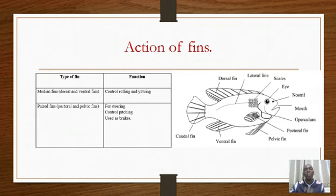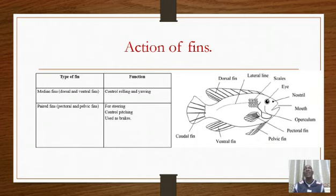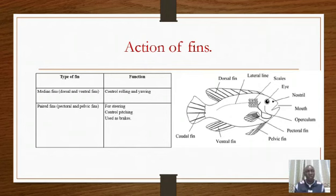However, fish experience three instabilities during locomotion: one called yawing, another called rolling, and another called pitching. Rolling and yawing are controlled by the median fins — that is, the dorsal and the ventral fins — while pitching is controlled by the pectoral and the pelvic fins. Now, what do we mean when we talk of rolling, yawing, and pitching?